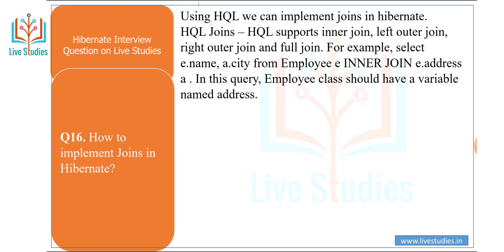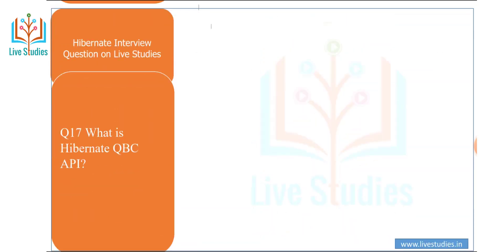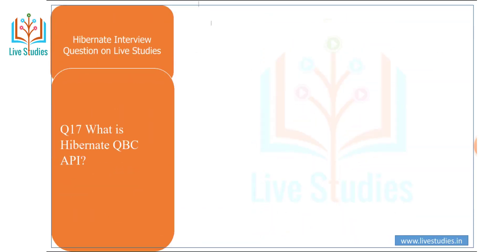Next question: how to implement joins in Hibernate using SQL? We can implement joins in Hibernate using SQL. SQL supports inner join, left join, outer join, right join, and full join. For example: SELECT e.name, a.city FROM Employee e INNER JOIN Address a. In this query, the Employee class should have a variable named address.